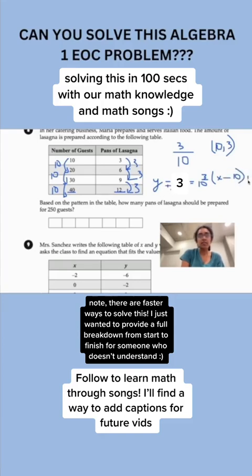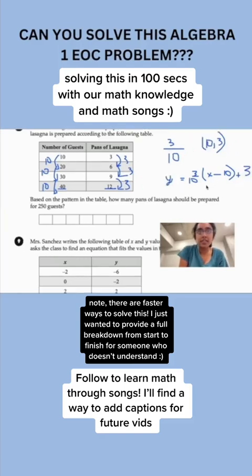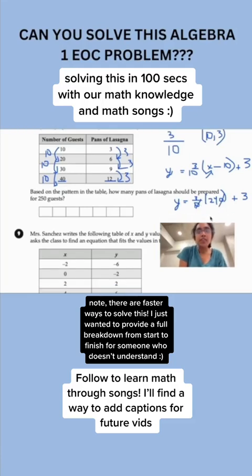Now let's plug in 250 here. So y equals 3/10 times (250 minus 10), so that's 240, and then you add 3. So you would do that, you would have 24 times 3 is 72, plus 3 is 75.